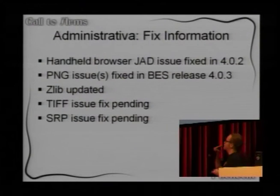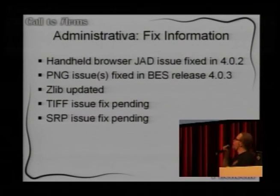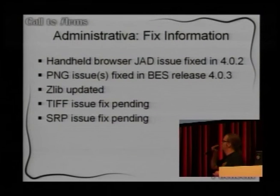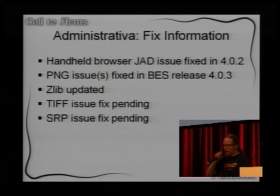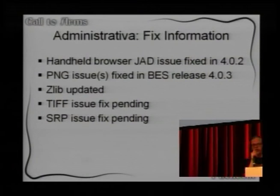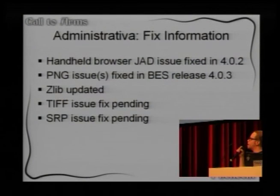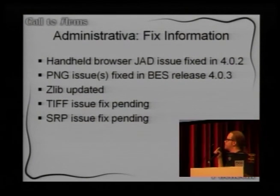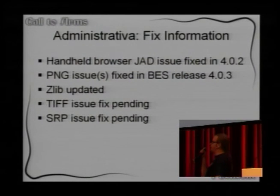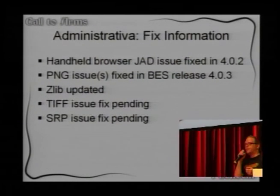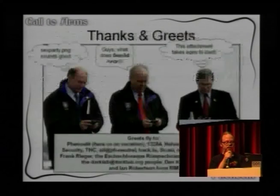Here's the final administrative info. The JUT issue is fixed on the handhelds. The PNG issues are fixed — the code no longer uses GraphicsMagick in this case. Zlib is updated. The TIFF and DSRP issues we were talking about are pending — there's not so much information on them right now.